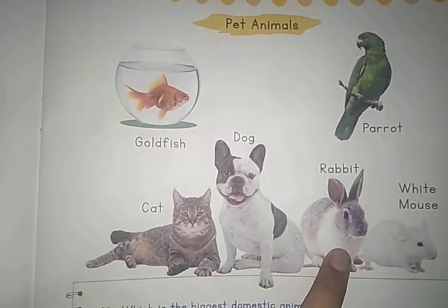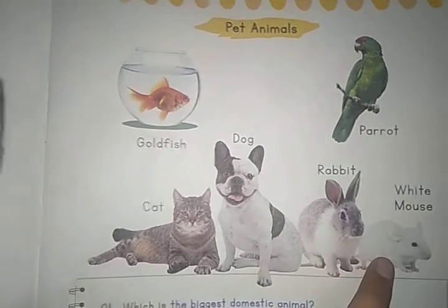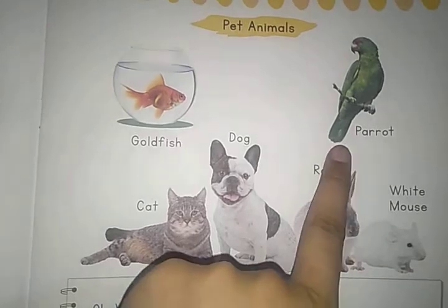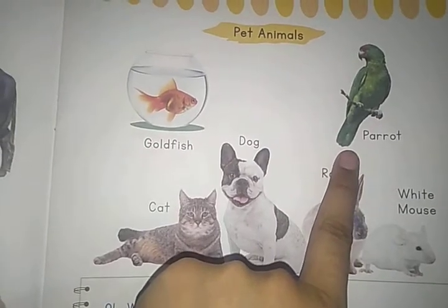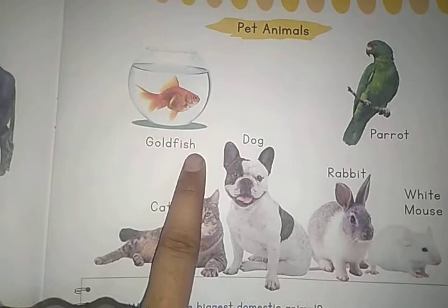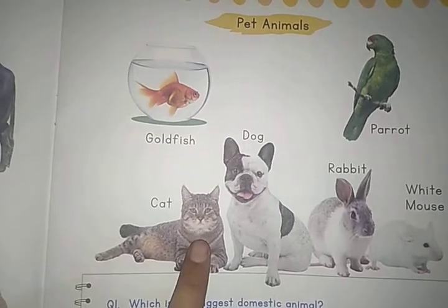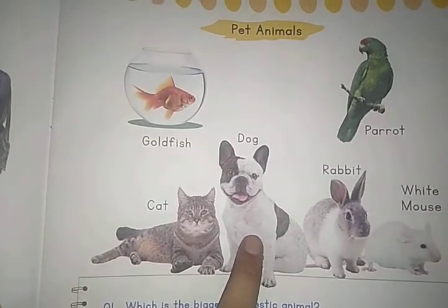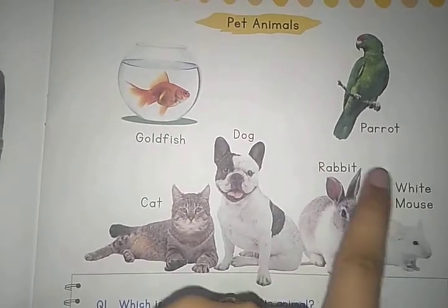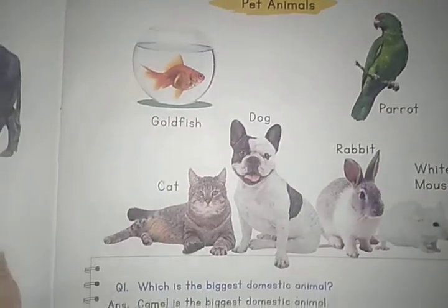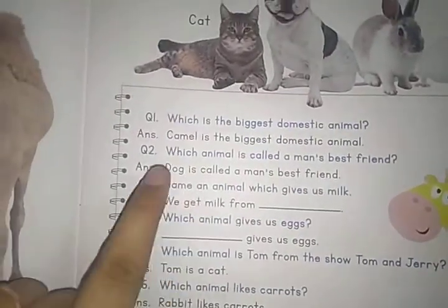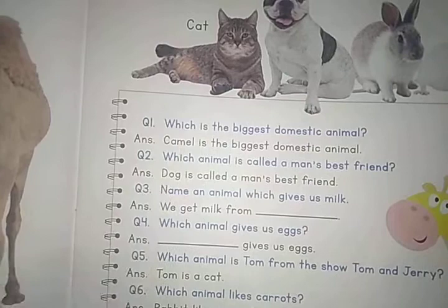White mouse, parrot. Now repeat: goldfish, cat, dog, rabbit, white mouse, parrot. And now bachche, next are question answers.